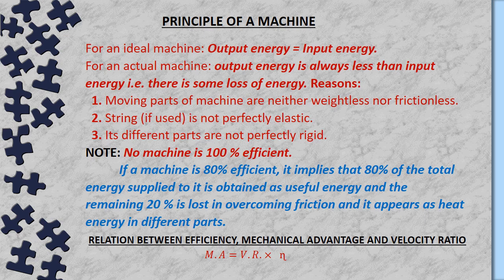The principle of a machine: for an ideal machine, output energy equals input energy. But for an actual machine, output energy is always less than input energy — there is some loss of energy. The reasons are: first, moving parts of a machine are neither weightless nor frictionless, so some energy is used in overcoming friction and moving those parts. Second, the string, if used in a machine, is not perfectly elastic. Third, its different parts are not perfectly rigid.